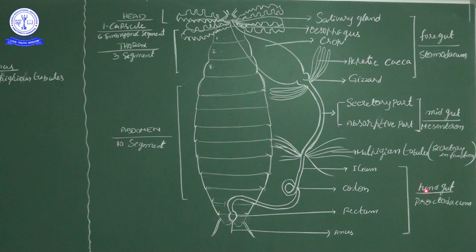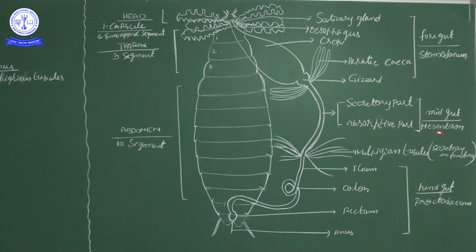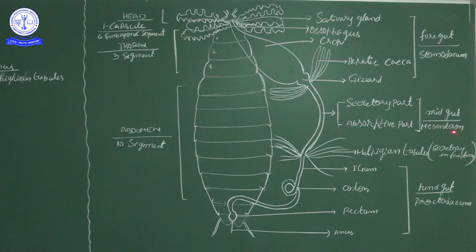In conclusion, the scientific names of the three regions of the alimentary canal: the foregut is called stomodeum (stoma means mouth); midgut is called mesenteron (meso means middle); hindgut is called proctodeum (procto means anus). This is the structural arrangement of the alimentary canal in the cockroach, along with the diagrammatic explanation.